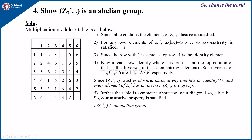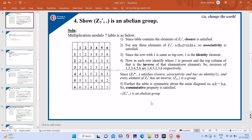Next is associativity. For any three elements of Z7, A into B into C is equal to A into B into C. So associativity is satisfied. You can take any three elements of Z7 star and show that it is satisfied — that you should write here.